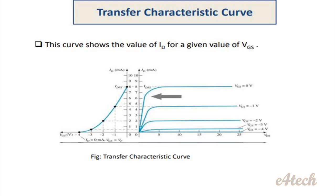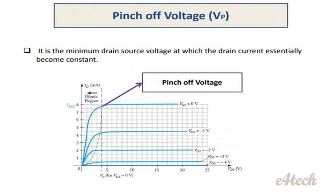Next, what is pinch-off voltage? Looking at the drain characteristics — the graph of drain current versus VDS for different VGS — at a particular point, the drain current becomes constant in each curve. Pinch-off voltage is the minimum drain-source voltage at which drain current essentially becomes constant.